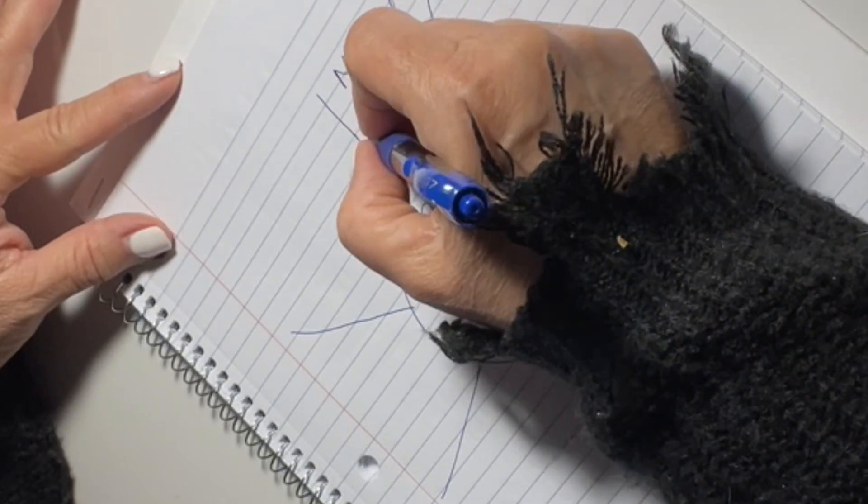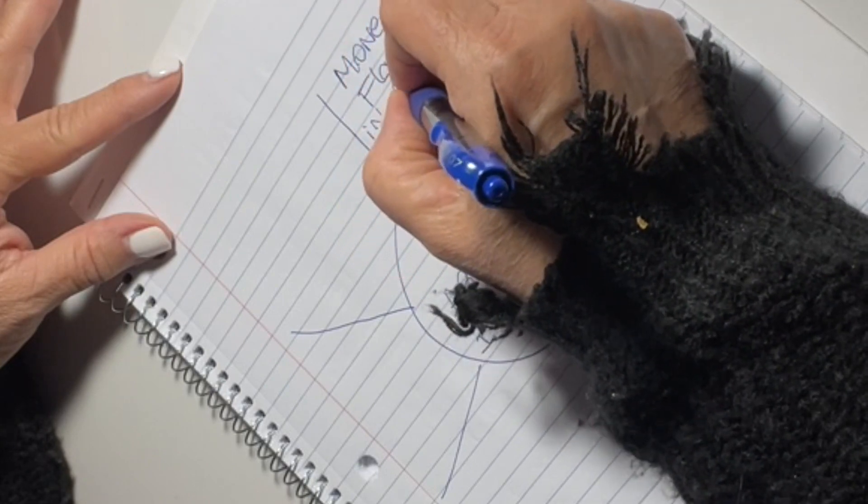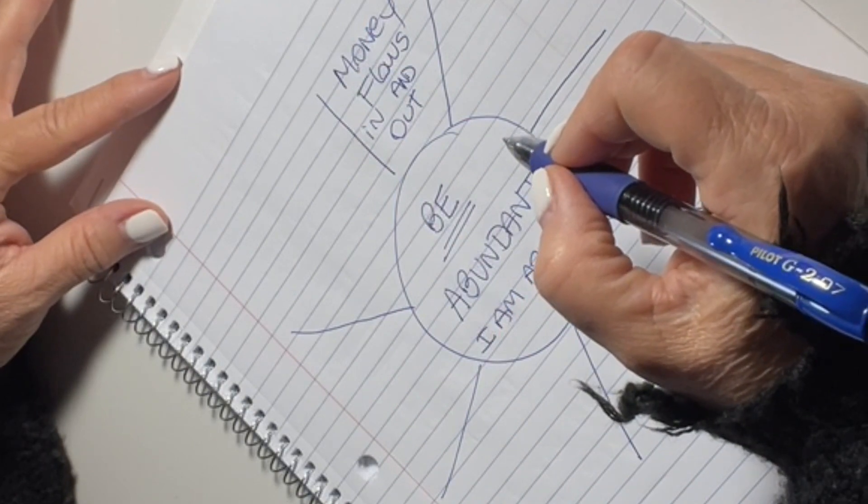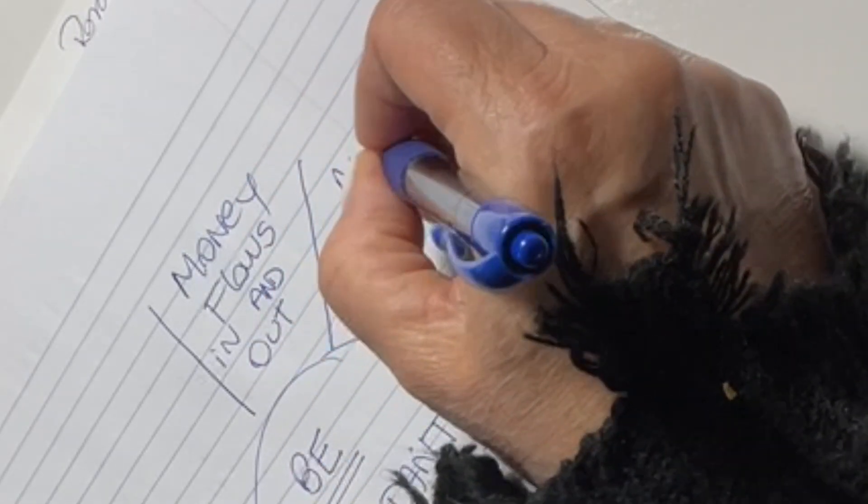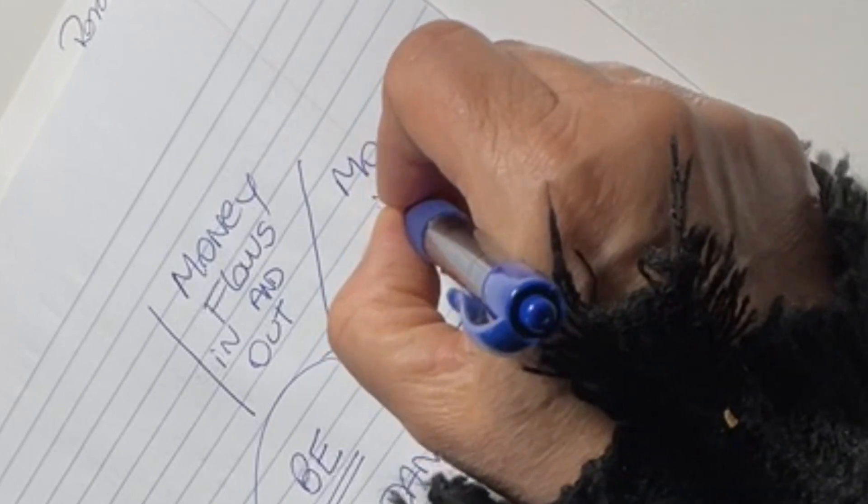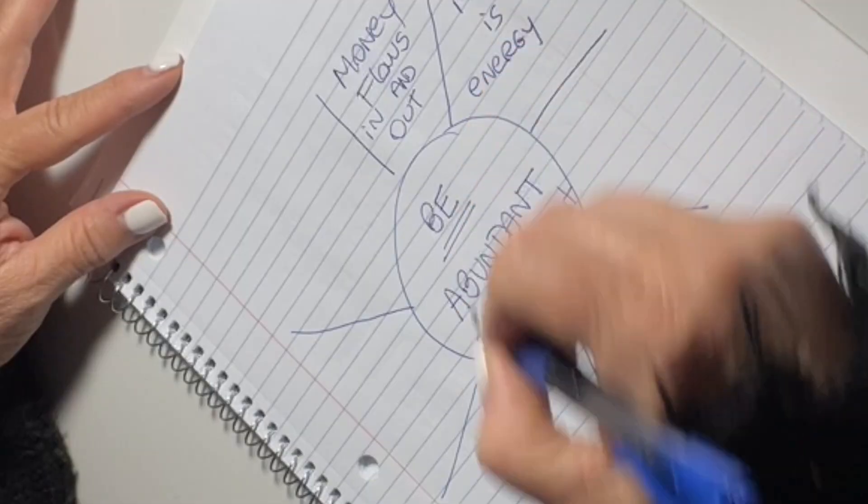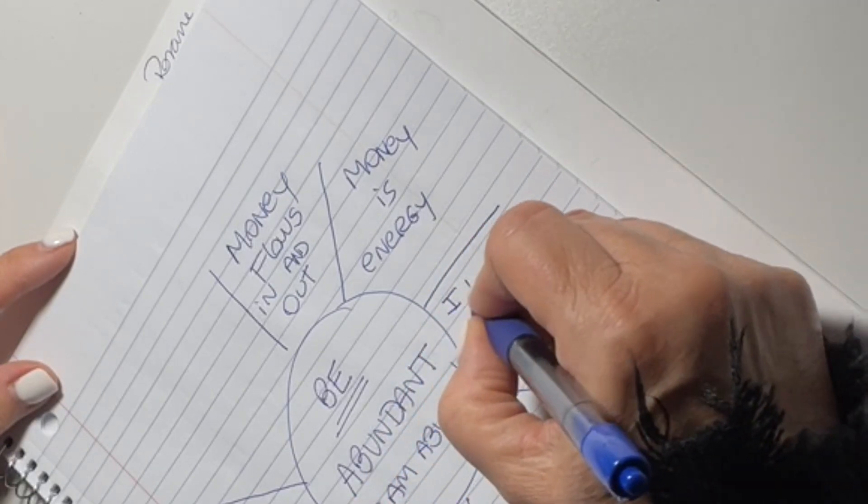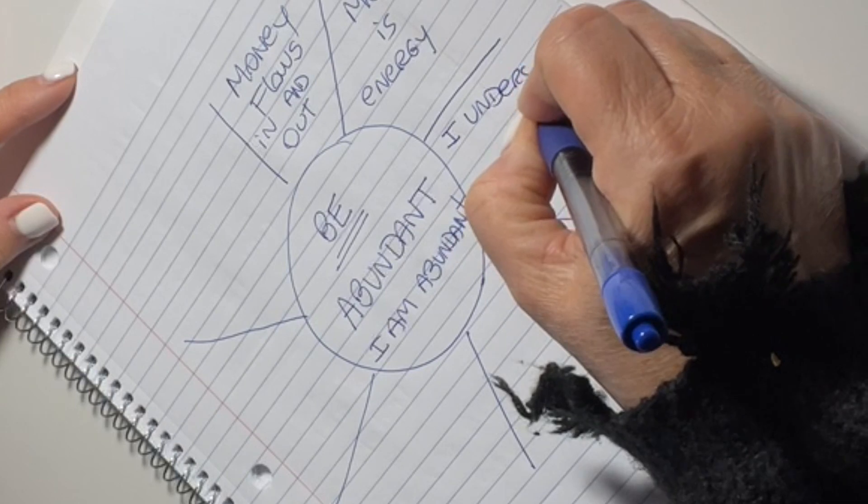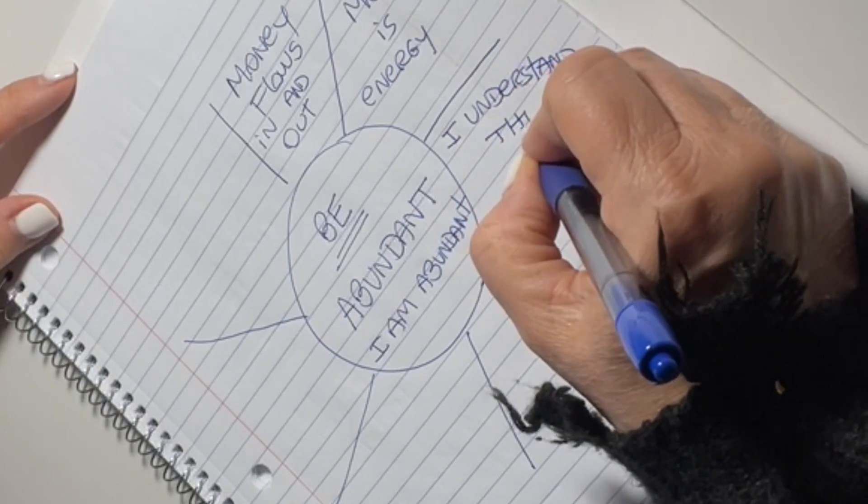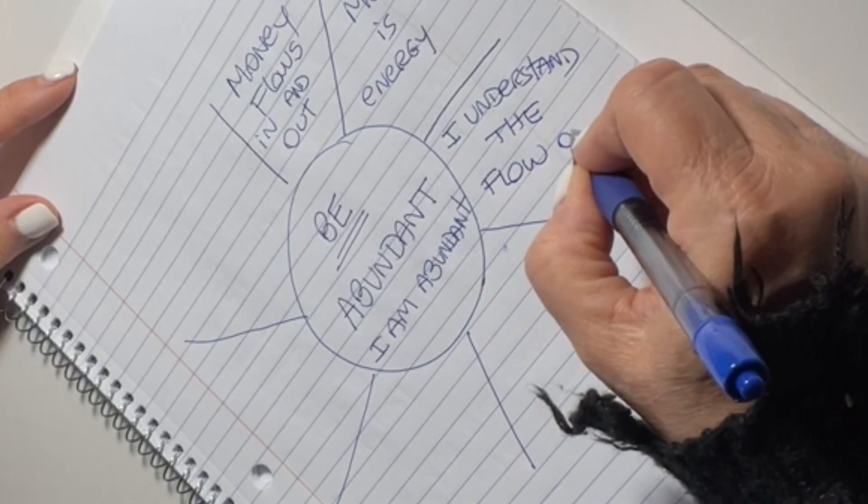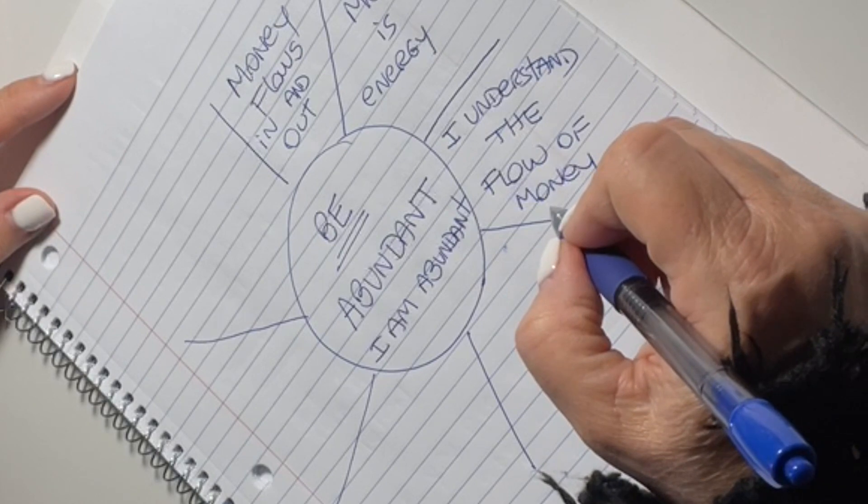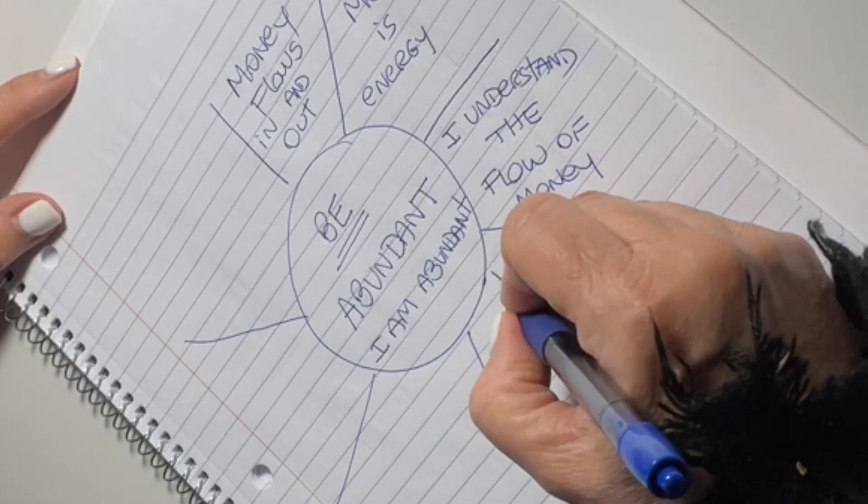Money flows in and out. It's important to engage in the process of learning that money is energy and as such it flows. Money is energy. So that makes me understand the flow of energy, makes me not be upset when I have to pay for something. I am happy to pay my bills because it enhances the knowledge and the feeling of this flow of energy that money is.